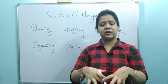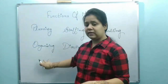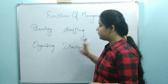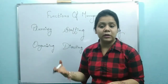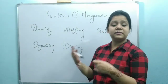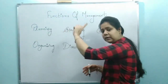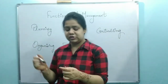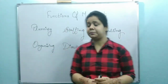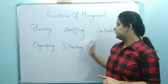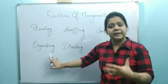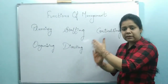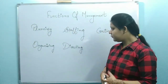One more thing — these functions of management are interrelated. For example, when we are organizing, we need to do planning. When we are directing, we also plan how to motivate our employees and which methods to use. Similarly, when we are in the staffing or controlling stage, planning is needed throughout. So these functions overlap and depend on each other.